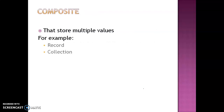Composite data types can store multiple values. Examples include records and collections. A collection of integers, float types, or character types falls under this category. A combination of integer, float, and character forms a record. Collections and records stored in composite data types will be used in our PL/SQL blocks. Thank you, hope you liked the lecture.